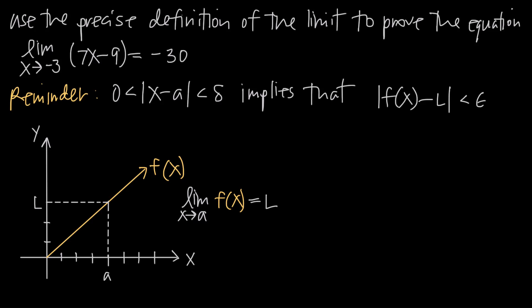In this video, we're talking about the precise definition of the limit, which is also called the epsilon-delta definition of the limit. We've been asked to use the precise definition of the limit to prove that the limit as x approaches negative 3 of 7x minus 9 is equal to negative 30.